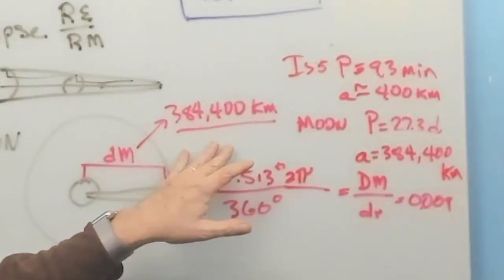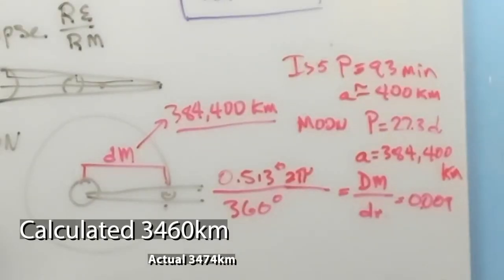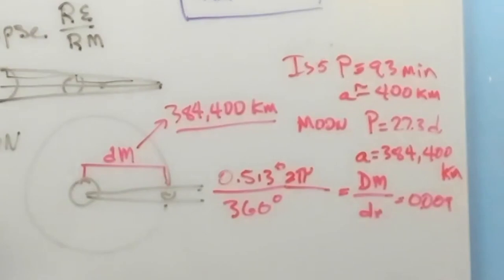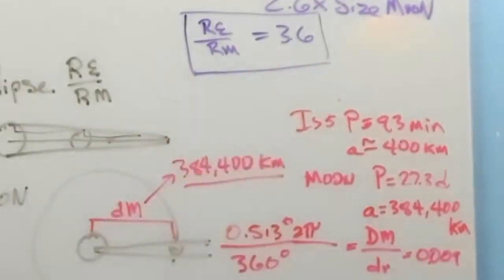Let's go ahead and do that. Here's the distance from the earth to the moon. We multiply that by 0.009 and we come up with the diameter of the moon of 3460 kilometers. The current accepted value for the diameter of the moon based on more sophisticated measurements is 3474 kilometers. We're only 14 kilometers off.